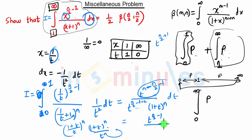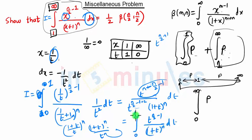So the numerator simplifies to t raised to (n/2 − 1), and we have the full expression as the integration from 0 to 1 of t^(n/2 − 1) upon (1 + t)^n, into dt — which is the desired result.